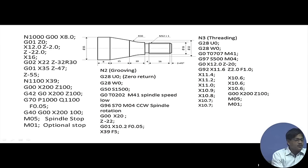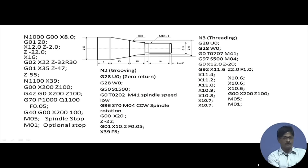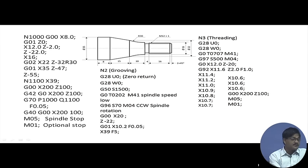Once roughing is done, G42 is declared for the finishing pass — tool offsets are now mentioned because it is a final cut. The finishing pass uses lower feed for better surface finish and lower depth for reduced thrust forces and deflection. After finishing, G40 cancels compensation, the spindle stops, and the tool returns to X0 Z0 for a tool change.